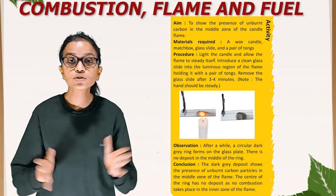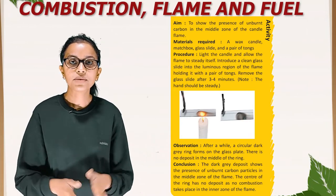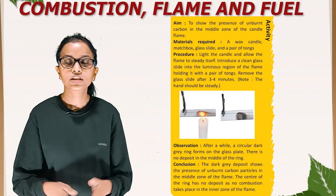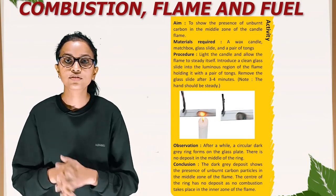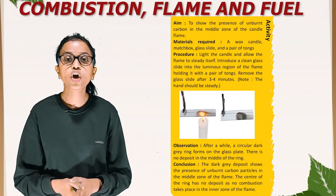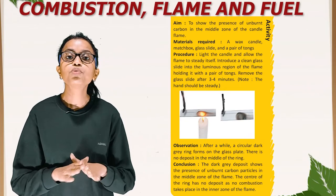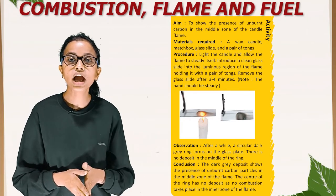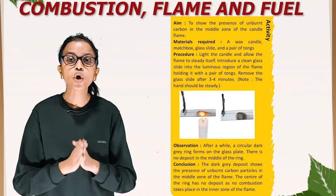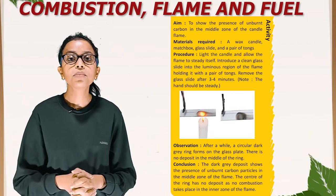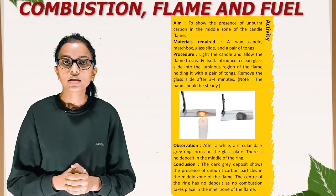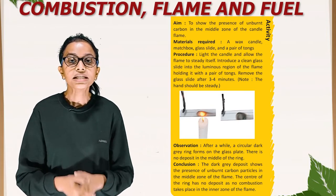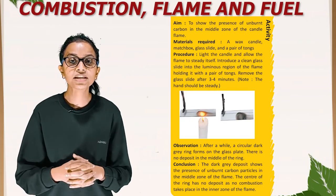Activity: to show the presence of unburnt carbon in the middle zone of the candle flame. Materials required: a wax candle, matchbox, glass slide, and a pair of tongs. Procedure: Light the candle and allow the flame to steady itself. Introduce a clean glass slide into the luminous region of the flame holding it with a pair of tongs. Remove the glass slide after 3-4 minutes. Note: the hand should be steady. Observation: After a while, a circular dark grey ring forms on the glass plate, with no deposit in the middle of the ring. Conclusion: The dark grey deposits show the presence of unburnt carbon particles in the middle zone of the flame. The center of the ring has no deposit as no combustion takes place in the inner zone of the flame.